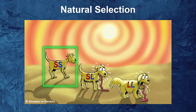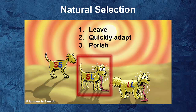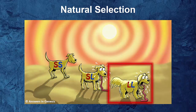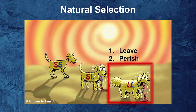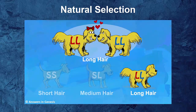Dog number one will be just fine because he has short hair. Dog number two will struggle because it's hot and his hair is kind of long, but he has some options because of his genetic makeup — he can either leave, quickly adapt, or if he can't do those, he'll perish. Dog number three is in a lot of trouble because he can't adapt, so he has two options: leave or perish. Animals that can adapt or relocate survive. What we see quite often is that animals well suited for the environment tend to dominate that area — dogs with short hair in deserts, and just the opposite in cold climates.